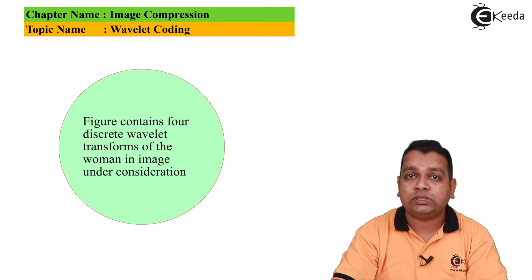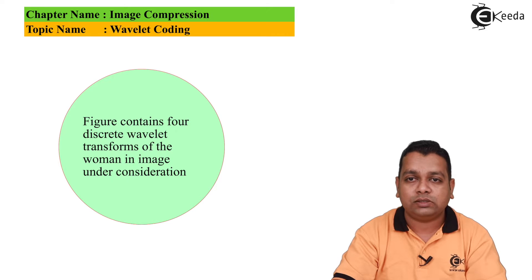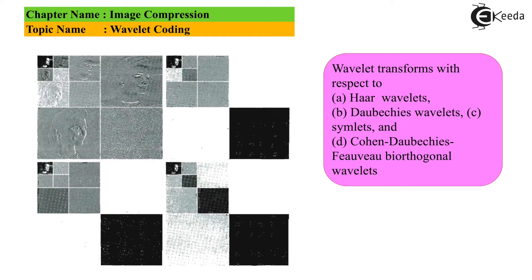Let us look at an example of selecting a specific Wavelet. The figure contains four discrete Wavelet transforms of the image under consideration. In part A, the decompositions are shown with four quadrants, where the first quadrant is further subdivided for additional decompositions. Figure A represents the Wavelet transform using Haar Wavelets, figure B represents the Wavelet transform using Daubechies Wavelets, figure C uses symlets, and figure D uses Cohen-Daubechies-Feauveau biorthogonal Wavelets.